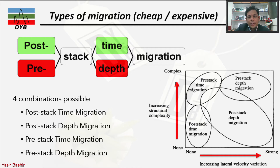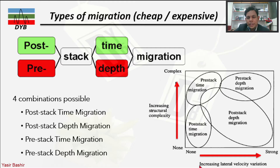Looking at complexity, we consider two axes: increasing lateral velocity variation and increasing structural complexity. Post-stack time migration is the most basic migration. If you have zero lateral velocity changes and low structural complexity, post-stack time migration is good enough.